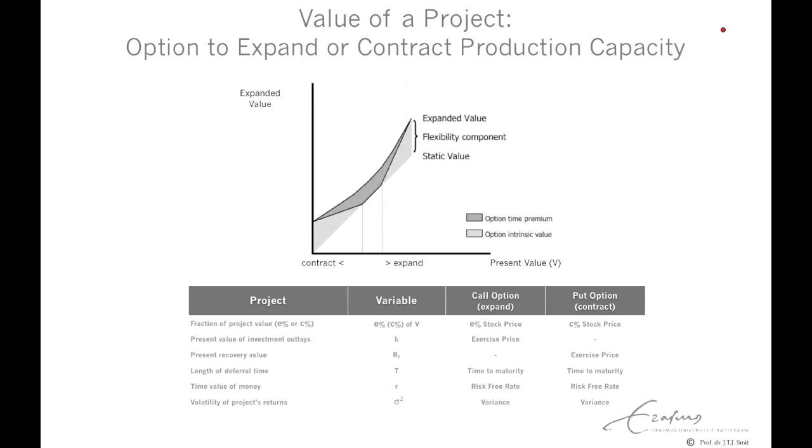The figure depicts the situation. On the horizontal axis, we have the underlying value, or the present value of cash inflows, which is uncertain. And on the vertical axis, we have the value of the facility, including both options.